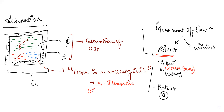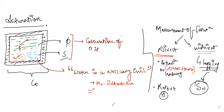Indirect measurements use correlations — for example, the capillary pressure versus saturation relationship can be used to calculate saturation at a particular point in the reservoir. Another indirect way is well logging: Archie's equation gives us saturation using well logs, specifically by measuring resistivity.